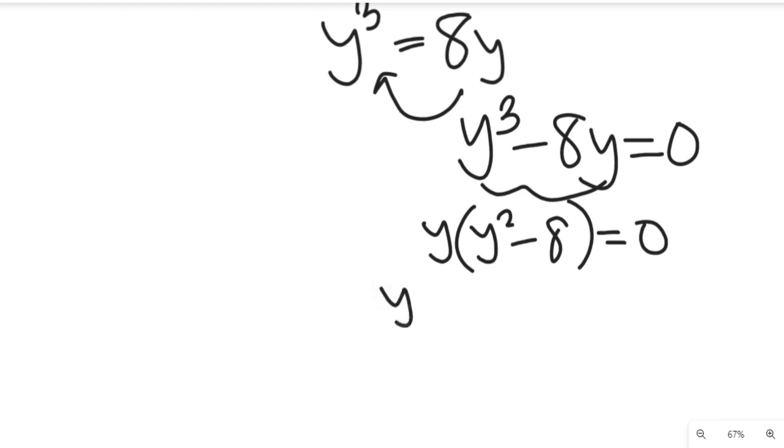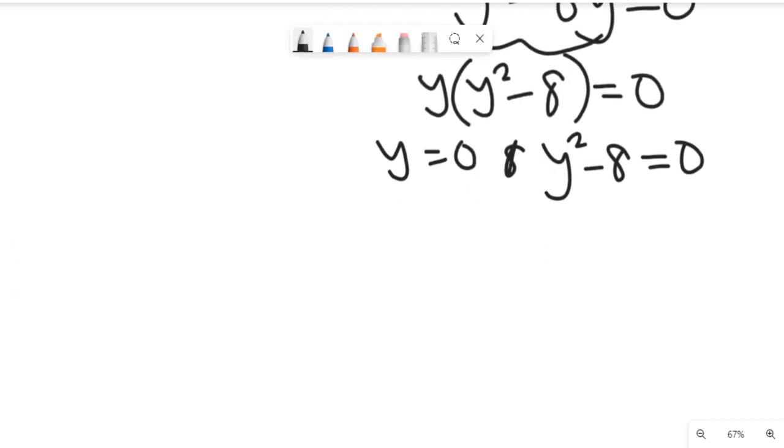So from here we can see that y is equal to 0, we have two solutions: y equals 0, and y² minus 8 is also equal to 0. Now we've gotten one solution for y, which is y equal to 0.